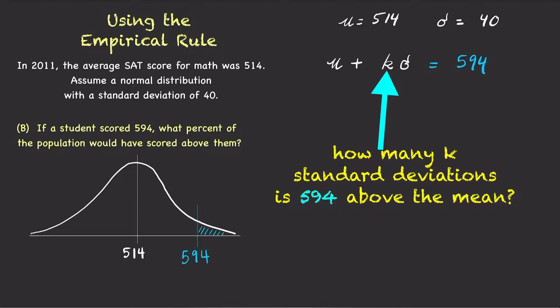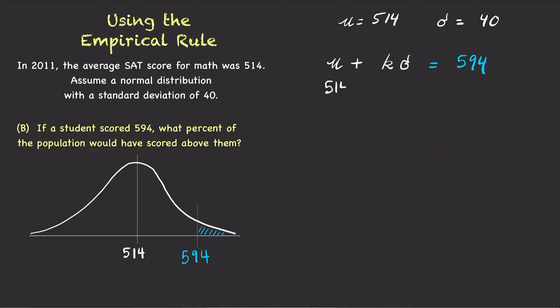Notice that 594 is above the mean of 514. In other words, 514 plus how many standard deviations is 594. Since sigma is 40, we can write this as 514 plus 40 times k equals 594.